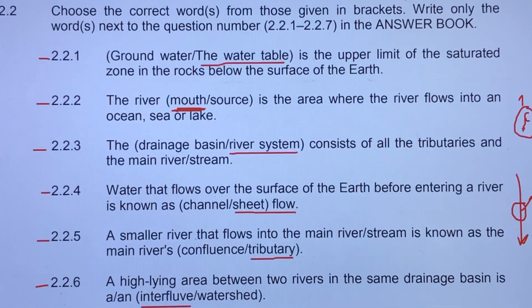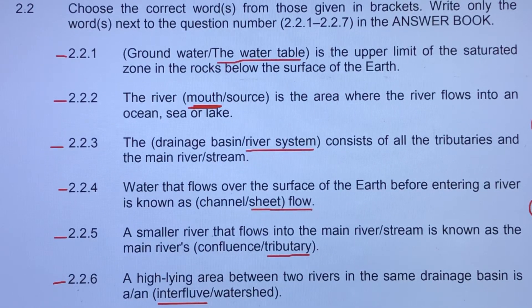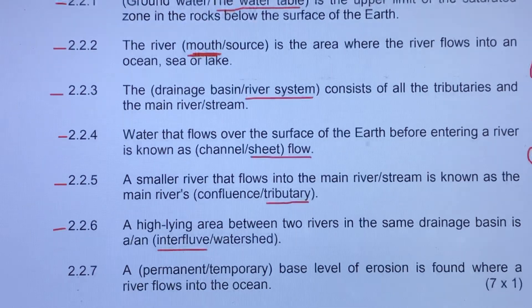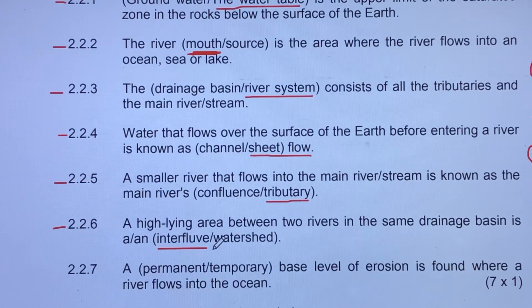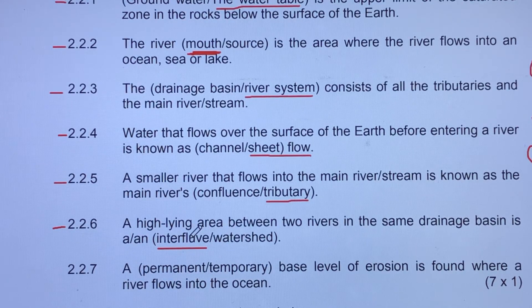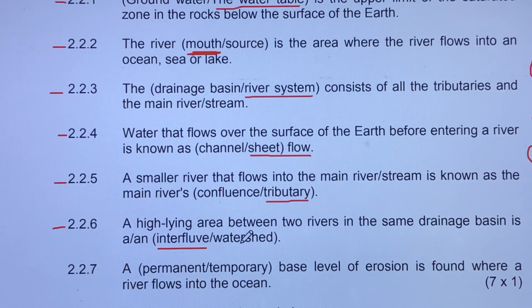Whereas an interfluve is a high-lying area found within the very same drainage basin that divides two rivers. So to summarize: an interfluve divides two rivers within the same drainage basin, and a watershed divides two different drainage basins.